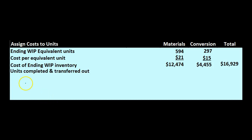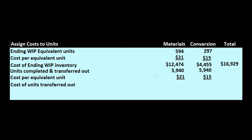Then we have the units completed and transferred out: 5,940 for both materials and conversion. Multiplying 5,940 by the cost per equivalent unit of $21 gives $124,740. Multiplying 5,940 by $15 gives $89,100. Adding $124,740 plus $89,100 gives us $213,840 as the cost of units transferred out.